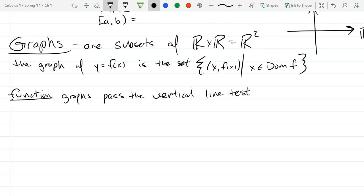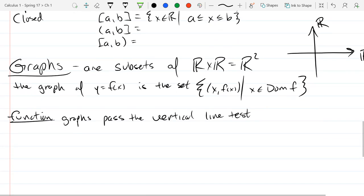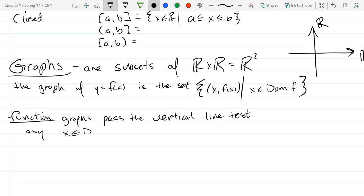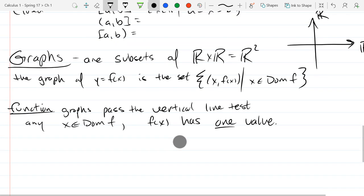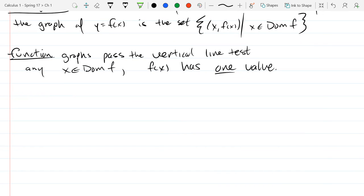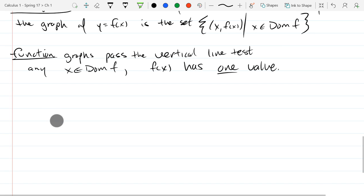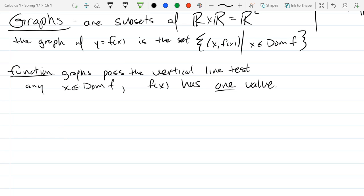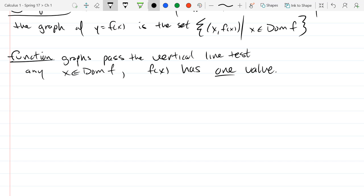So subset means some of the points on here. So it could look something like that. As long as you pass the vertical line test, you have a function. Function graphs pass the vertical line test. And that means any x in the domain, f of x has one value. It's not to say that the value has to be one, but it has a value and it doesn't have two values or three values.